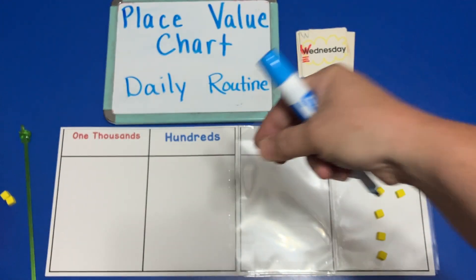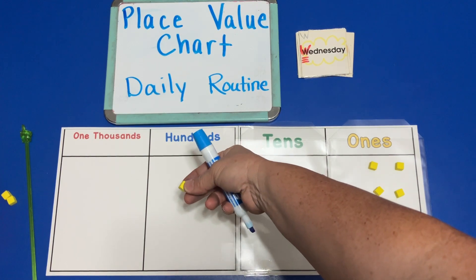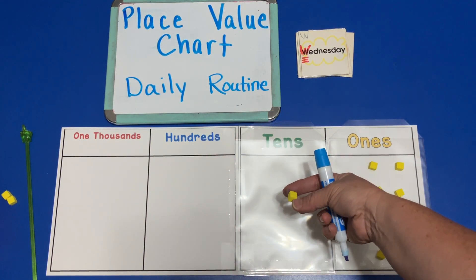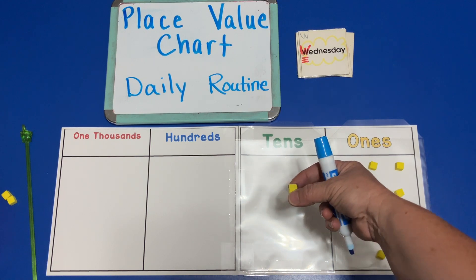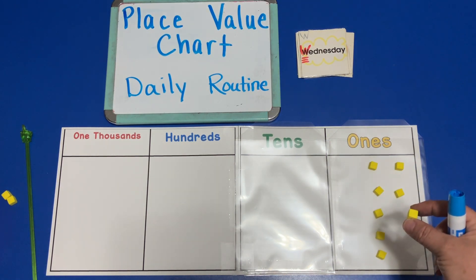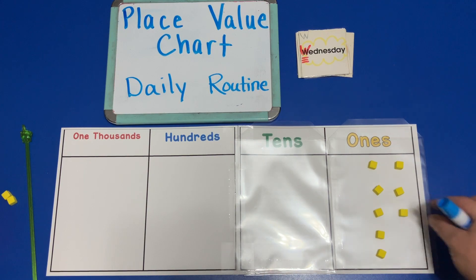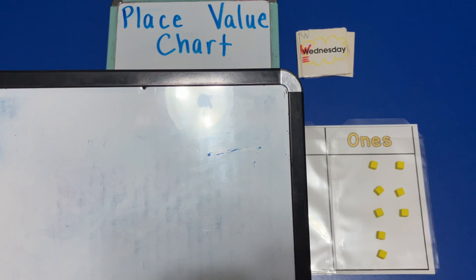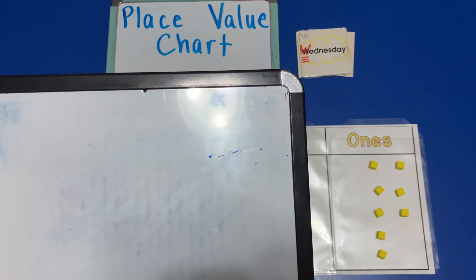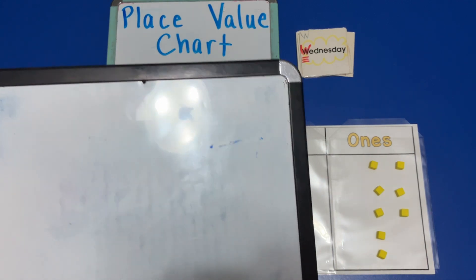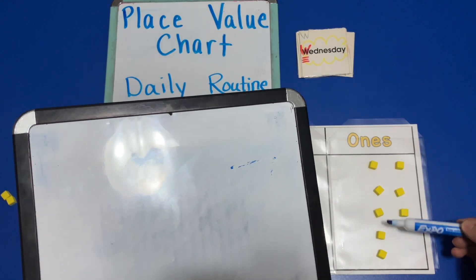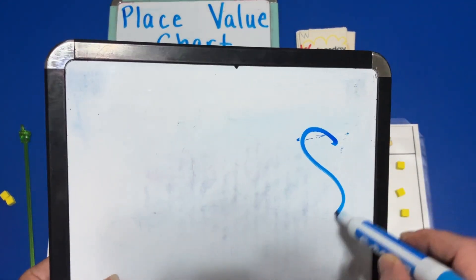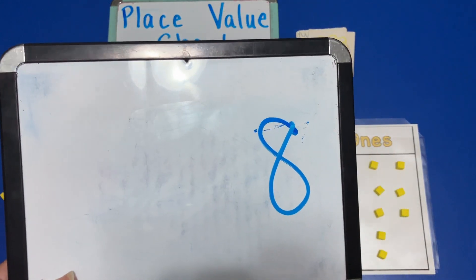We put that one unit in the ones place. So what is the value of our base-10 blocks on our place value chart on Wednesday? One, two, three, four, five, six, seven, eight. The value on Wednesday is eight.